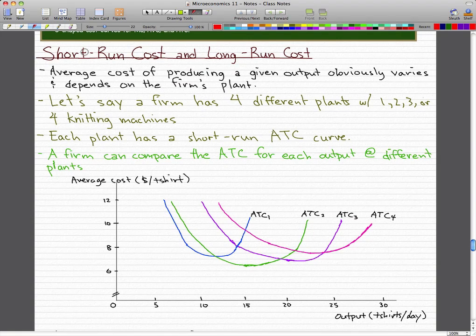So that's what we have here. But first, let's discuss this. Short-run cost and long-run cost. The average cost of producing a given product or a given output obviously varies and depends on the firm's plant because any firm that we talk about, they're not the same as each other. They're unique. They're their own entity.